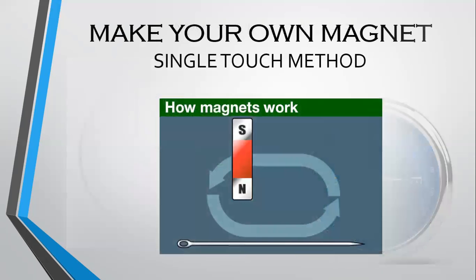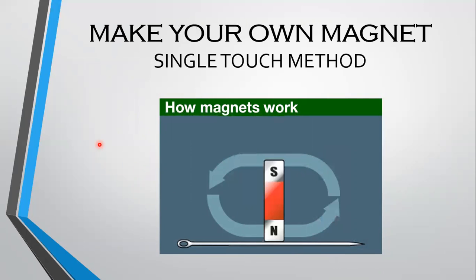Making your own magnet. There are several methods of making magnets. The single touch method is the simplest of them. Take a rectangular piece of iron or an iron pin and place it on the table. Take a bar magnet and place one of its poles near one edge of the iron needle. Without lifting the bar magnet, move it along the length of the iron bar till you reach the other end. Now again, repeat this process for 30 to 40 times.